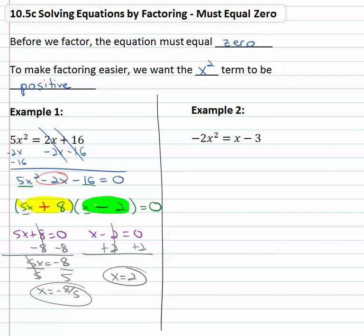We've got our two solutions. When x equals negative eight fifths or when x equals two, the equation five x, the expression 5x² will equal the expression 2x + 16.